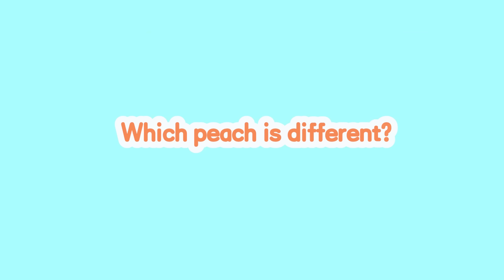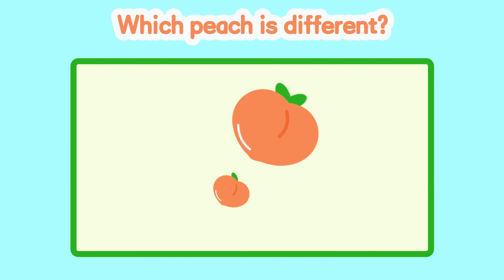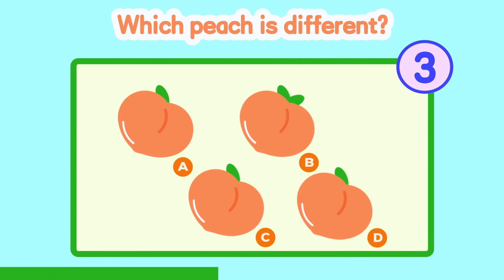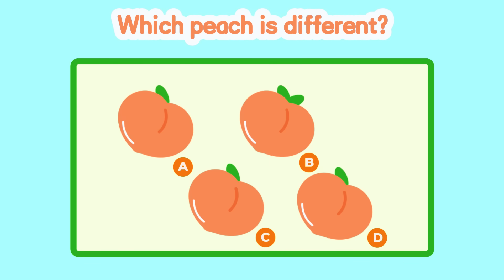Number two. Which peach is different? Time out. This peach is different. The answer is B.